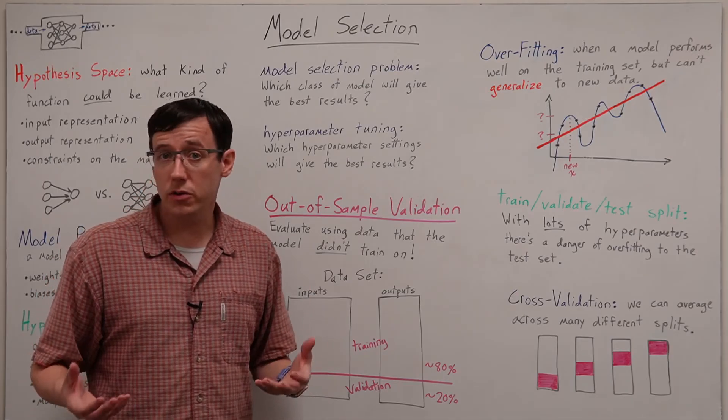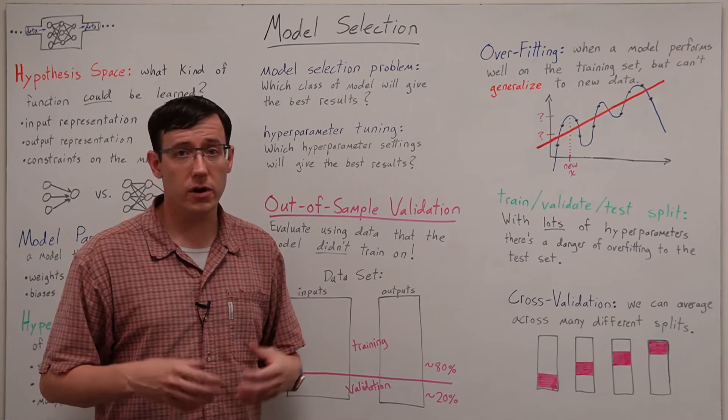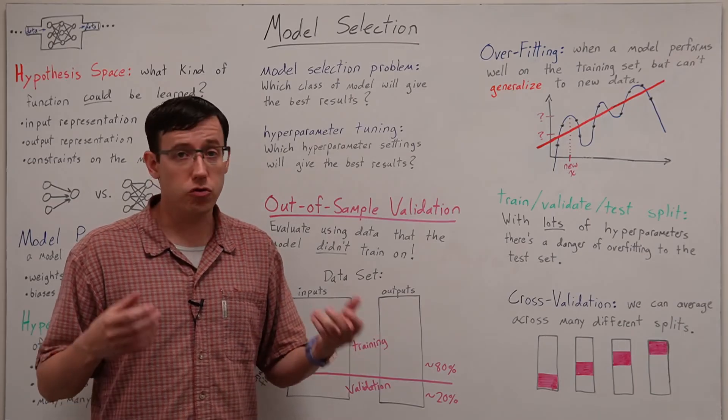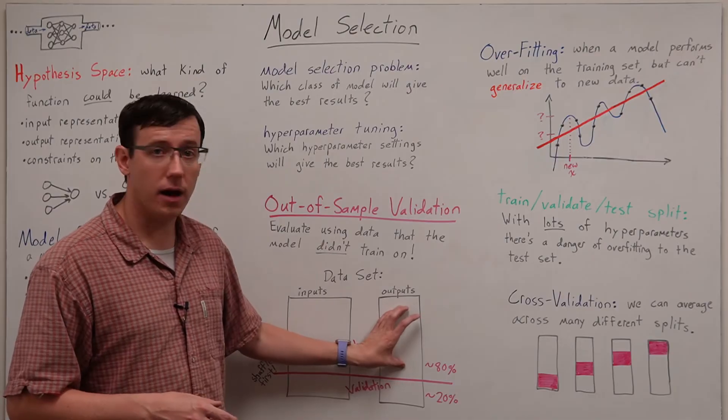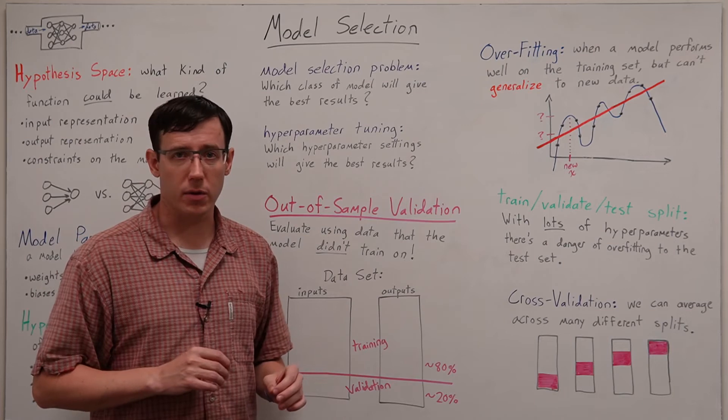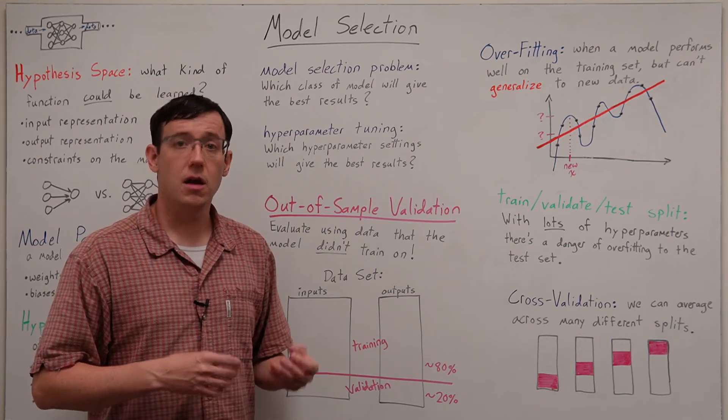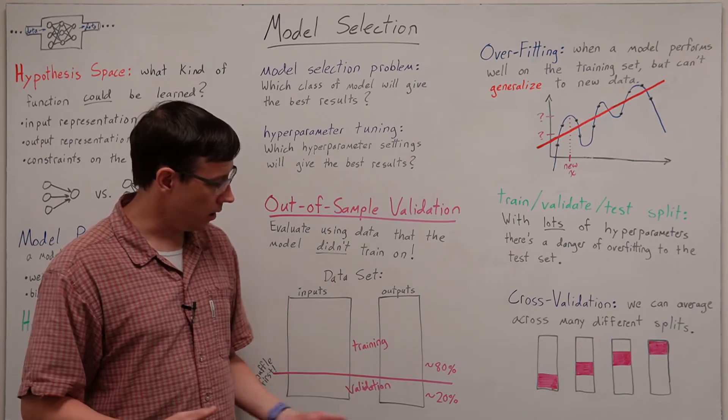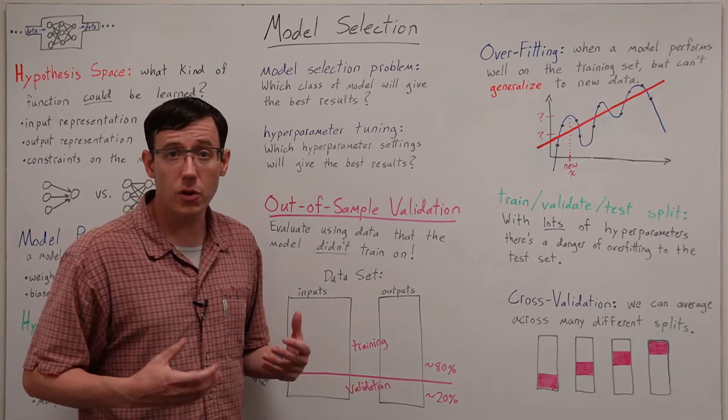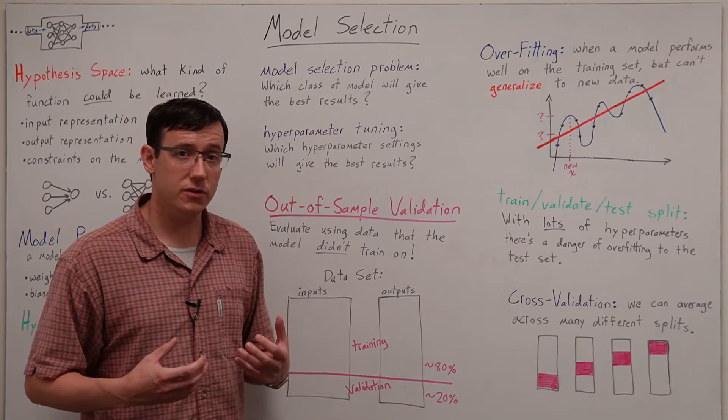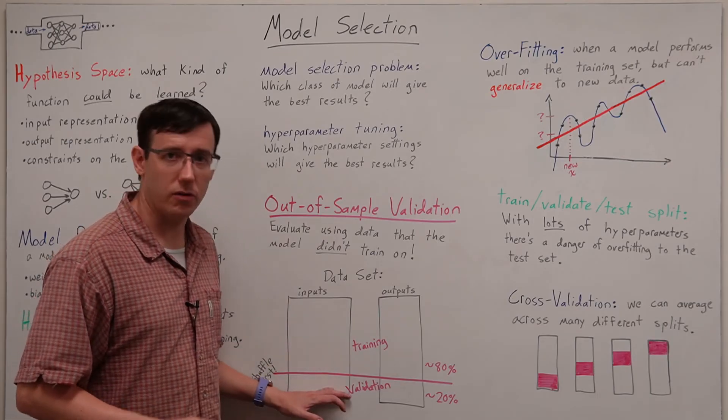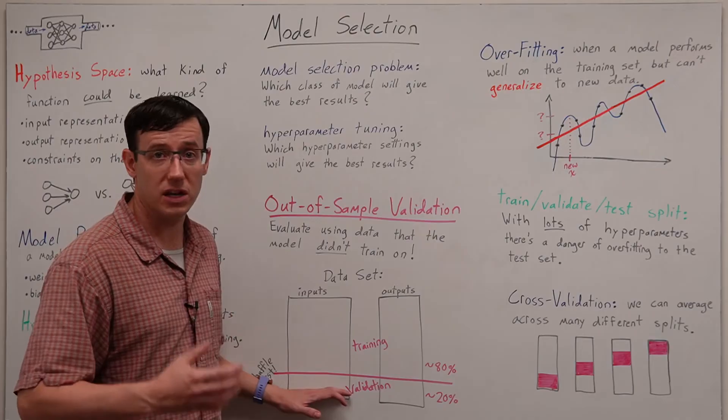And so if we want to decide between two different options for a hyperparameter like the learning rate we can try training our model on the training set using each of those different parameters and then test the resulting model using data that it was not trained on. And this is so important because it allows us to experiment on how well our models will generalize to data they haven't seen before.